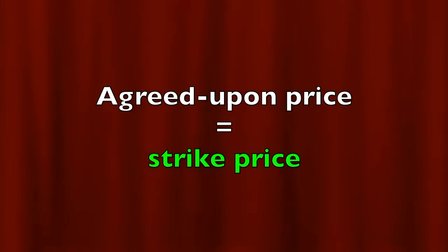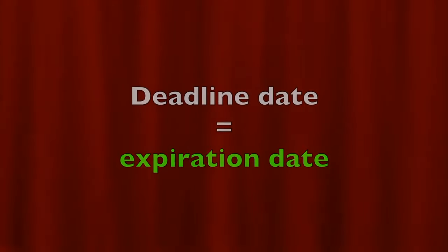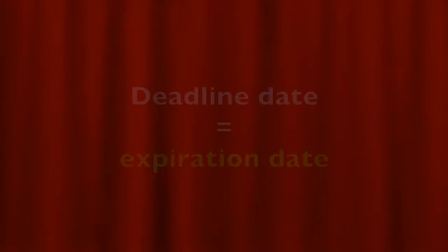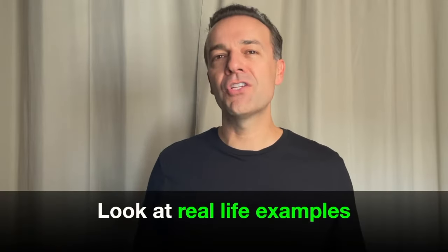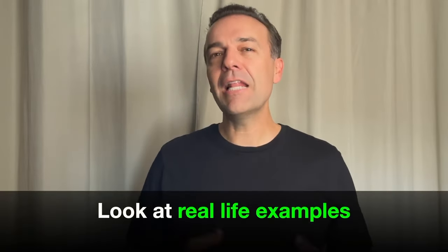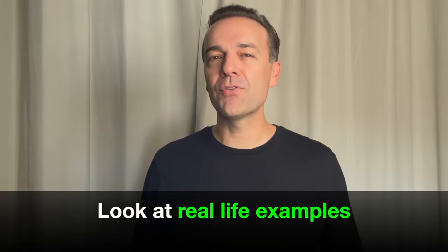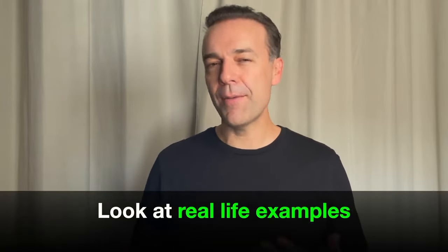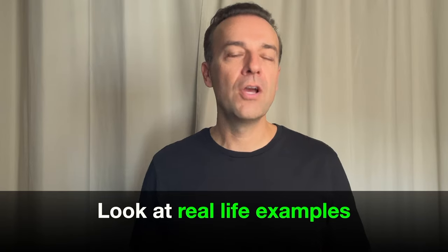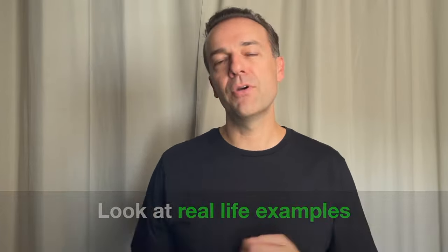That agreed upon price is referred to as the strike price. And the date that this must be done by is referred to as the expiration date — that's the date that the option expires. So that's the basic terminology in option trading. Now let me show you some examples of how these two types of options work: calls and puts.